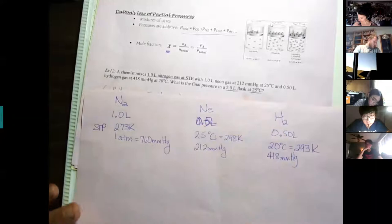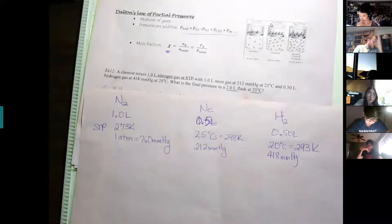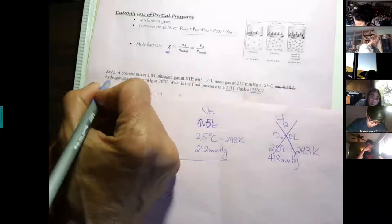A student points out a different version of the problem on their notes. The corrected problem: a chemist mixed 1.0 liters of nitrogen gas at STP with 500 milliliters of neon gas at 212 millimeters of mercury at 25°C. If the final mix is in a 2.0 liter flask at 25°C, what is the final pressure? So the neon was half a liter — that's why it's good to make the list.